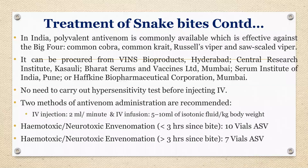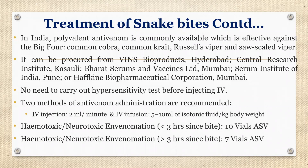When a question comes, write that ASV is polyvalent, effective against common cobra, common krait, Russell's viper, and saw-scaled viper. It is prepared at VINS Hyderabad, Central Research Institute Kasauli, Bharat Serum Mumbai, Serum Institute of India Pune, and Haffkine Institute Mumbai. Do not do a hypersensitivity test. How it is injected: directly IV at 2 ml per minute, or IV infusion 5 to 10 ml in isotonic normal saline per kg body weight. If less than 3 hours: 10 vials of ASV. If more than 3 hours: 7 vials.